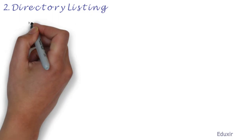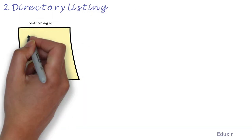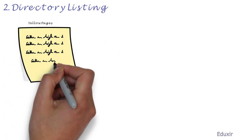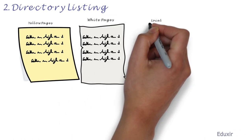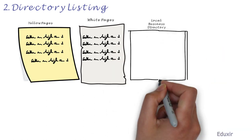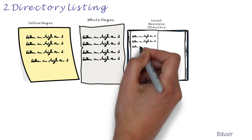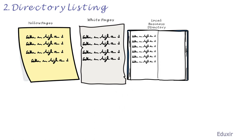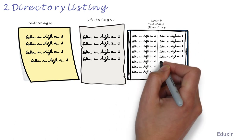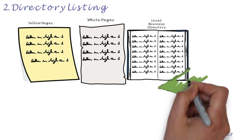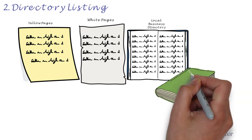The second option is Directory Listing. The business details are printed in yellow or white pages, local business directories, trade or union directories, etc. The business reaches the customers who use this media.